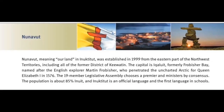Nunavut, meaning 'our land' in Inuktitut, was established in 1999 from the eastern part of the Northwest Territories, including all of the former district of Keewatin. The capital is Iqaluit, formerly Frobisher Bay, named after the English explorer Martin Frobisher, who penetrated the uncharted Arctic for Queen Elizabeth I in 1576. The 19-member Legislative Assembly chooses a premier and ministers by consensus. The population is about 85% Inuit, and Inuktitut is an official language and the first language in schools.